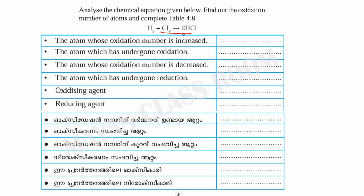H2 plus Cl2 gives 2HCl. My question is: to form this formula, H2 has oxidation number 0, and Cl2 is also 0. In the product HCl, H is plus 1 and Cl is minus 1.